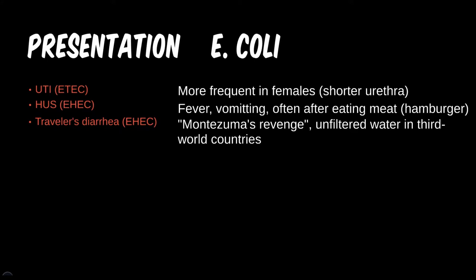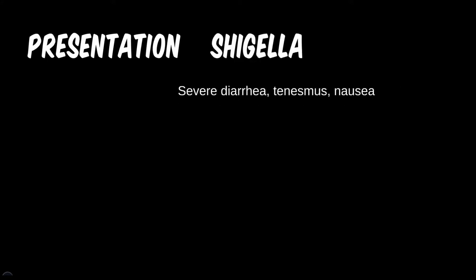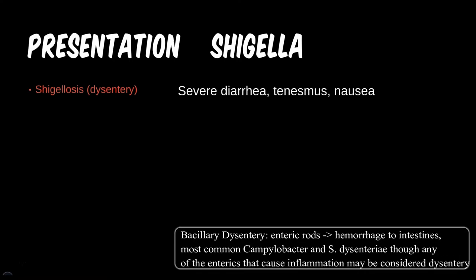The next gut-wrenching bug is Shigella. We already know there are a few interesting diseases this one causes. This first patient has severe diarrhea, tenesmus, and nausea. You can add this shigellosis disease to the hemorrhagic gastritis list. When people speak of dysentery, this is often the bacteria that they're talking about.